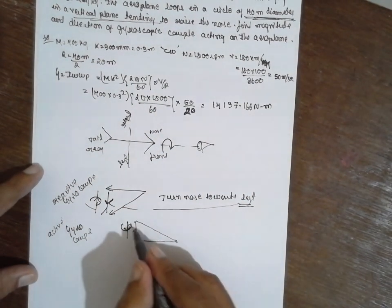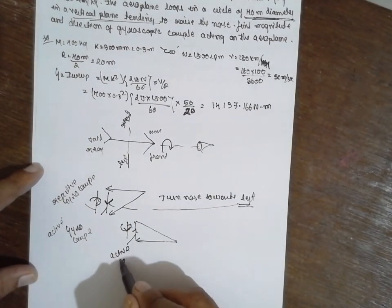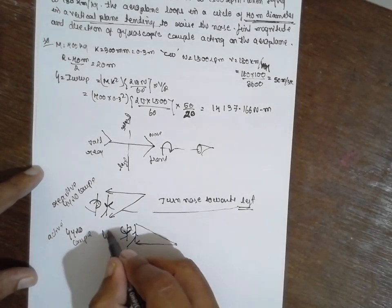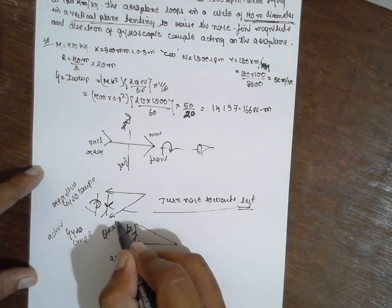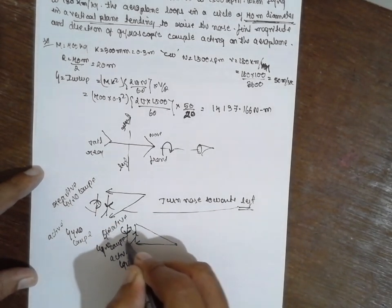Curling indicate above. This will be active couple, active gyrocouple, the reactive gyrocouple. Here what happened?